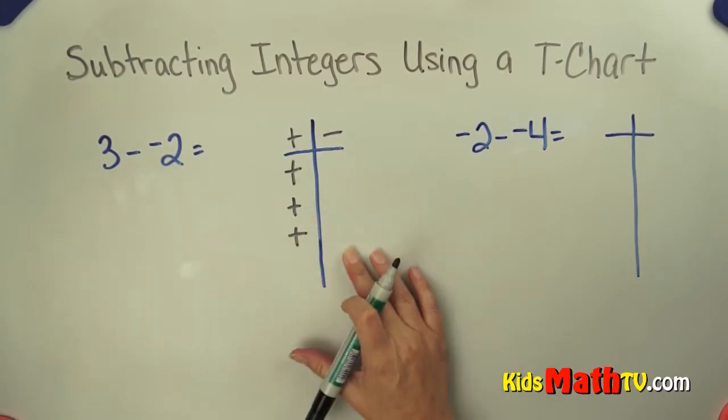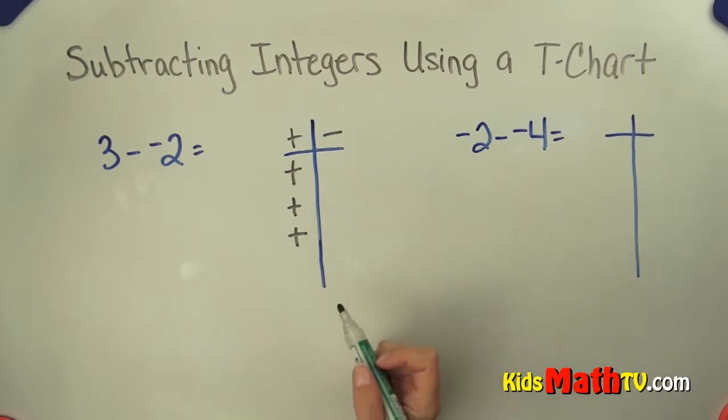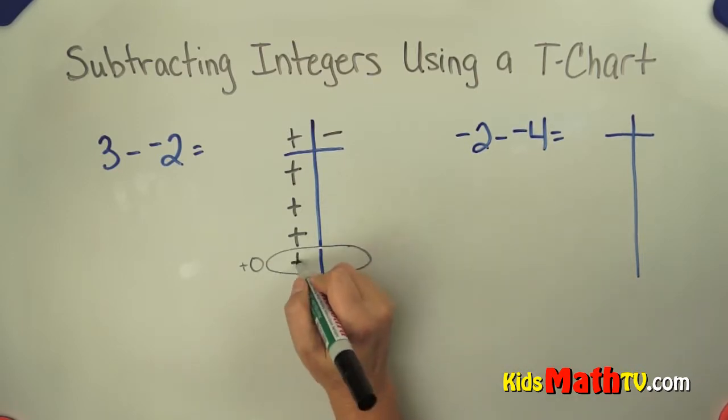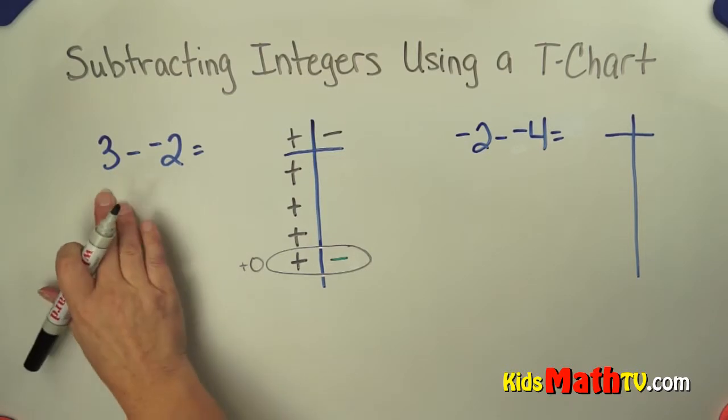Well, there are no negatives here to take away, are there? So what I'm going to do is I'm going to create negatives. I'm going to add 0 to this T-chart, and a 0 is simply a positive and a negative. So I still have 3 positives and 0, which is still equal to 3.